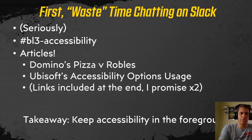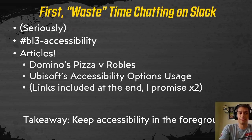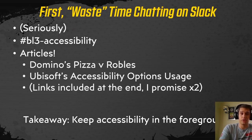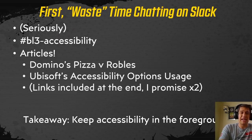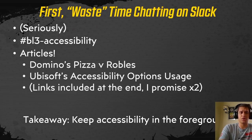Two articles in particular really stick out. The first talks about Domino's Pizza and Robles — a court case headed to the Supreme Court at the time. The other article was from Ubisoft and talked about the usage metrics of their accessibility features. The data showed just how widespread the usage was and how it demanded the industry start pouring real resources into their development. These conversations kept people informed and interested. Everyone at Gearbox was encouraged to participate and it paid massive dividends. Without this home base to return to, without it constantly stoking the flames, accessibility wouldn't have been in the back of everyone's mind as they went about their work.